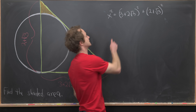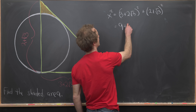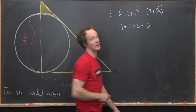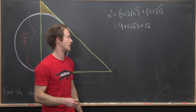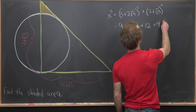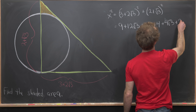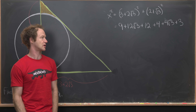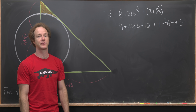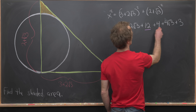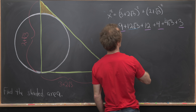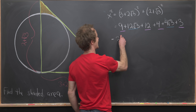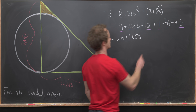Now we've just got some arithmetic to do. Expanding the first term gives 9 plus 12 times the square root of 3 plus 12, from foiling. Then the second term gives 4 plus 4 times the square root of 3 plus 3. Combining the integer terms — 9, 12, 4, and 3 — and the radical terms — 12 root 3 and 4 root 3 — gives us 28 plus 16 times the square root of 3.